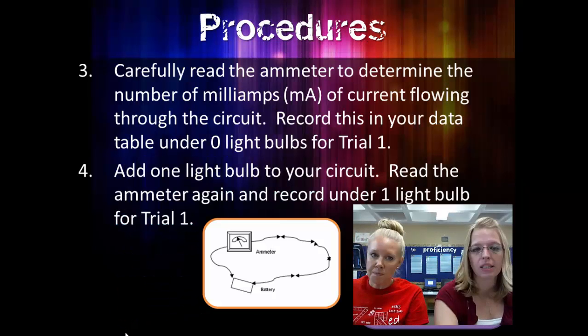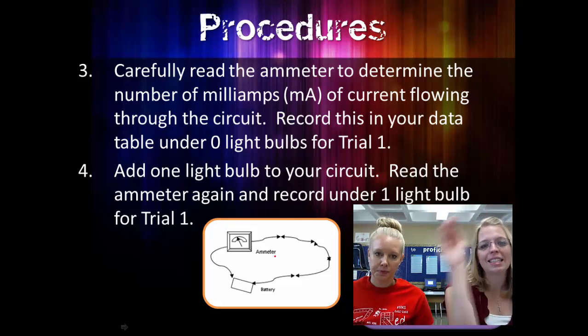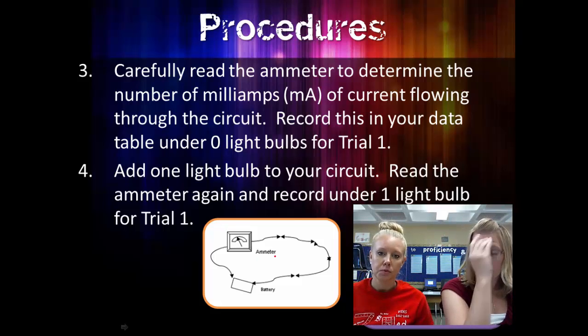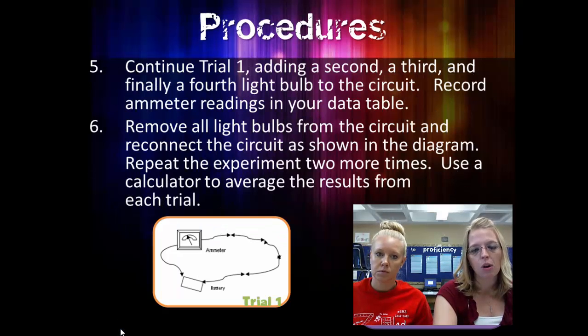After that, it's pretty simple. You have no light bulbs. You just have six wires and one gigantic loop. No light bulbs. So you're going to write that number down in your data table. And then step four, you're going to add a bulb. Bam! I added a bulb right there between those two wires. I'm going to write that down for one bulb in trial one.